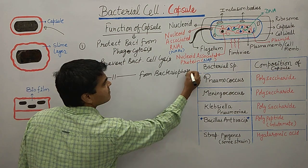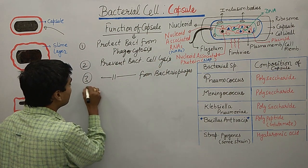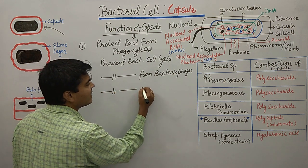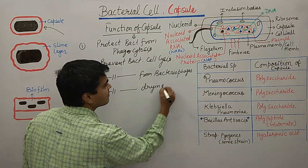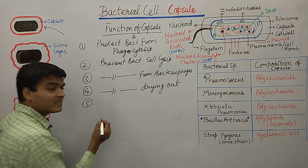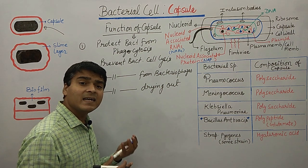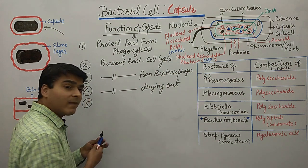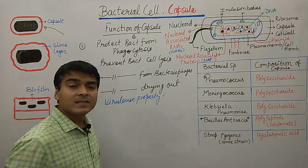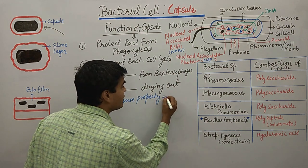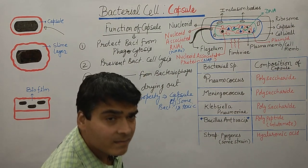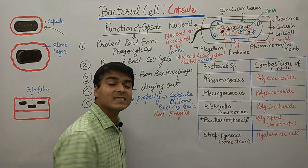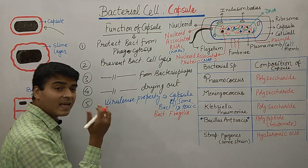Another function of the capsule is it protects bacteria from drying out. The next important function is it can give the bacteria a virulence property — it can act as a toxic material. An example of such a category is Bacteroides fragilis.